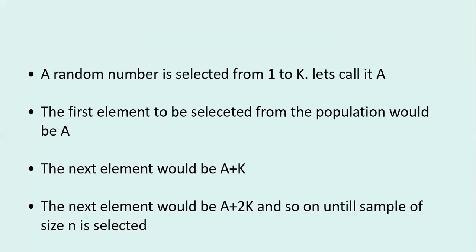I selected the first element from the first interval — the 5th shop is my first element (A = 5). The next element is A plus K: 5 plus 20 equals 25, so the 25th shop is my second element. The third element is A plus 2K: 5 plus 2 times 20 equals 45, so the 45th shop is my third element.